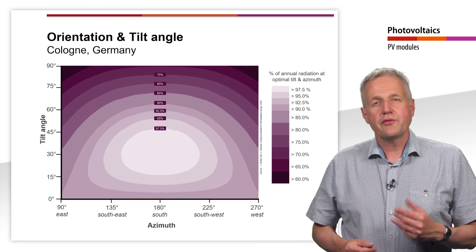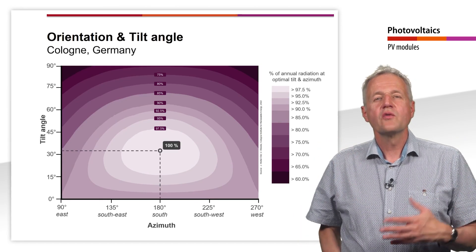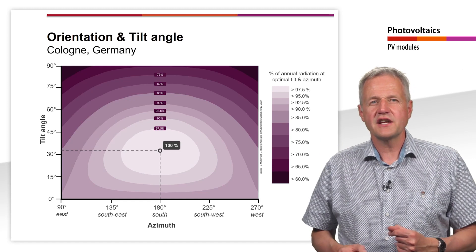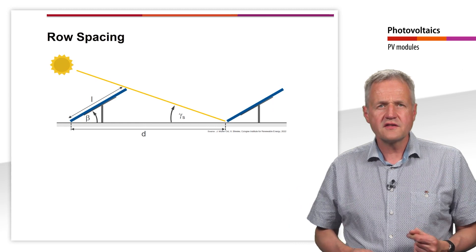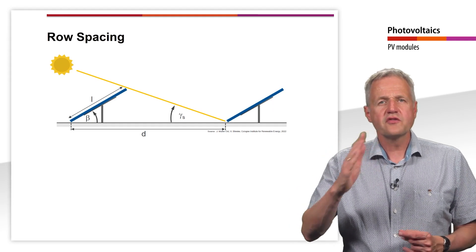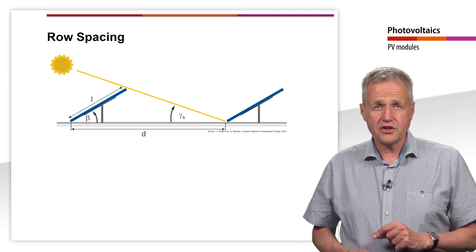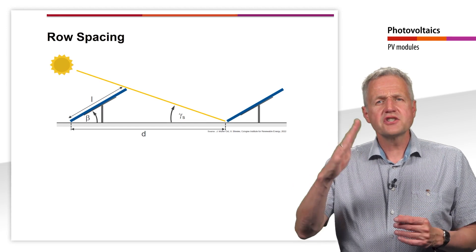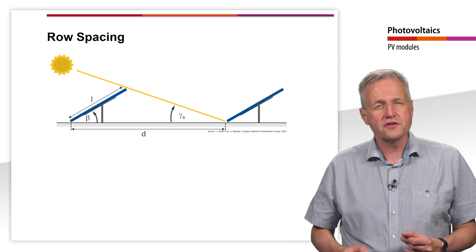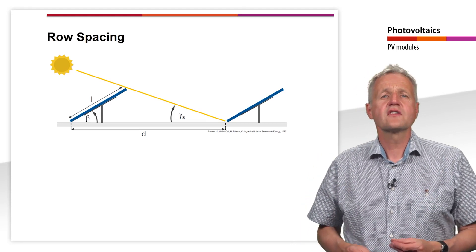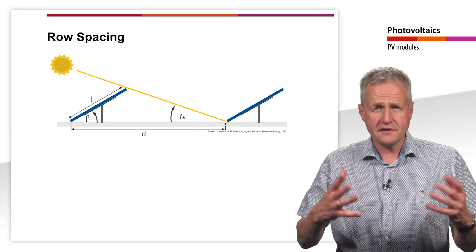The maximum annual irradiation of 1160 kWh per square meter is obtained with an exact south orientation and an angle of inclination of 33 degrees. Especially for ground-mounted systems, where the angle of inclination can be chosen more or less freely, an optimal orientation and tilt angle is usually chosen. However, the inclination of the module also results in a problem: shading occurs directly behind the modules. In order to avoid shading losses, sufficient distance between the module rows must be taken into account when planning the system.